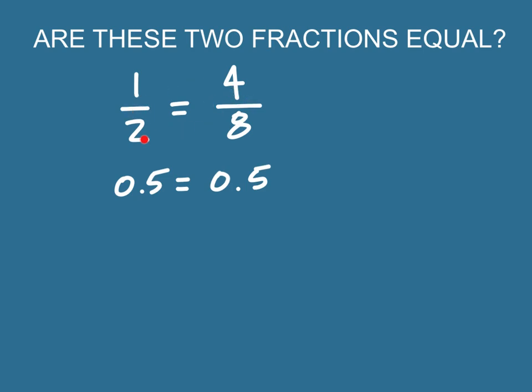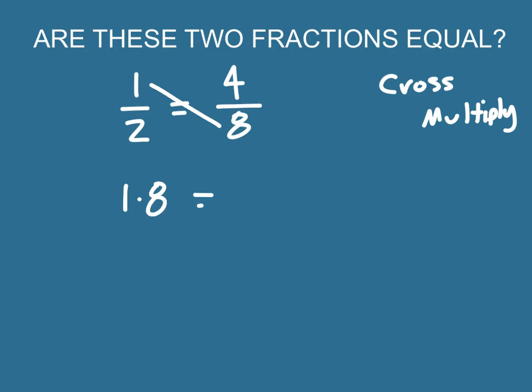But we can also do this thing what we call cross multiply. And this is going to be huge for our ability to solve proportions. So one thing that we can do is if we were to cross multiply these by doing 1 times 8, is that equal to 2 times 4? 1 times 8 gives us 8 and 2 times 4 also gives us 8. So there are two ways for you to determine whether or not fractions are equal using the decimal approximation or by cross multiplying.